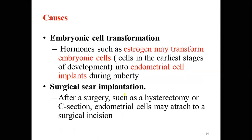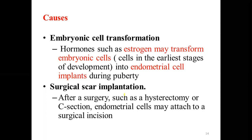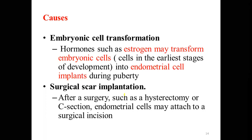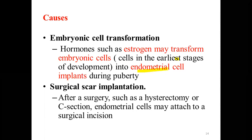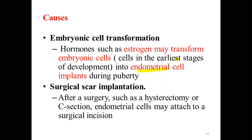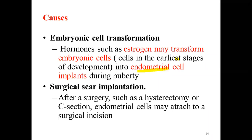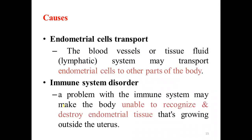Another possible cause is embryonic cell transformation. Hormonal imbalances, mainly estrogen, may transform embryonic cells — those in the early stage of development — into endometrial cell implants during puberty or the reproductive age. Estrogen has a significant role in this transformation. Additionally, during surgeries like cesarean section or cystectomy — surgical scar implantation — some endometrial cells may attach to the surgical incision site and continue to grow and proliferate.